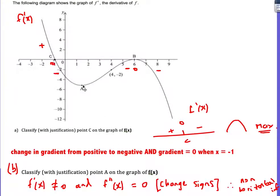For part B, we look at point A. The first differential is not 0 because it's not on the x-axis. But the gradient of the gradient graph is 0, so f double dash x equals 0. The first differential is not 0, but the second differential is 0, and the gradient of the gradient graph changes from negative to positive. Therefore, we have a non-horizontal inflection.